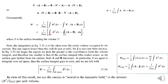We now have two volume integral terms. The second term involves the divergence of a vector (A cross B). We apply Gauss's theorem: a volume integral of a divergence converts to a closed surface integral. So the del dot (A cross B) volume integral becomes a closed surface integral of A cross B dot dS.